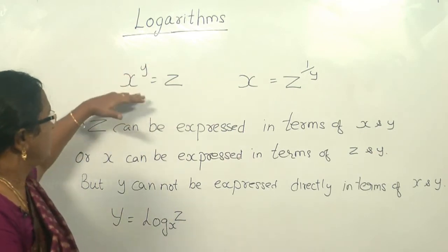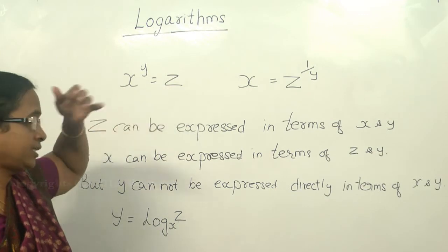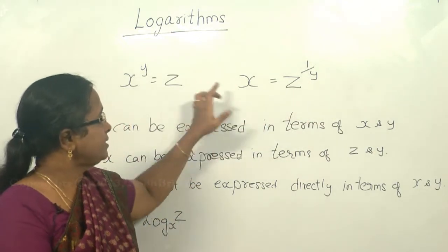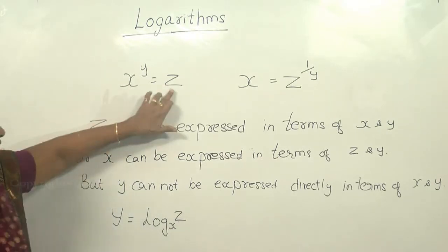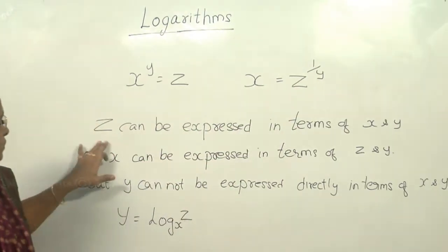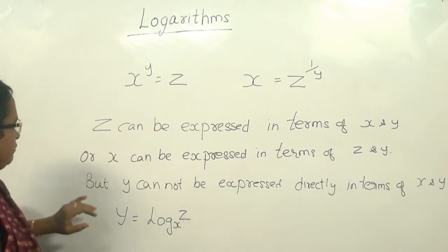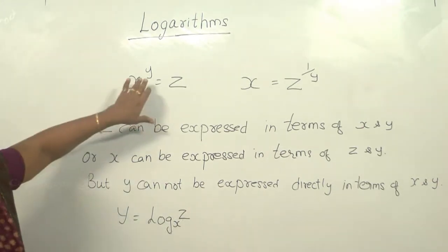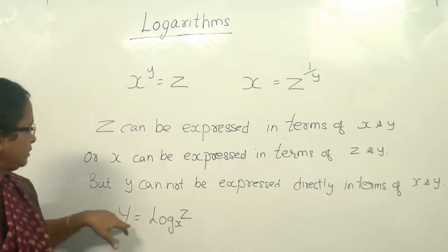Logarithm — where it is used. If x to the power y equals z, we can express x in terms of z and y by writing x equals z to the power 1 by y. In general, z can be expressed in terms of x and y, or x in terms of z and y, but y cannot be expressed directly in terms of x and z. This is where we make use of the logarithm — to express the y term.